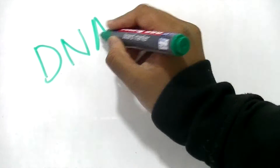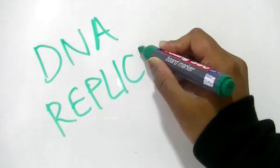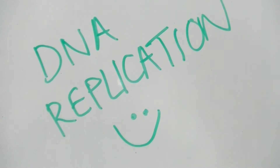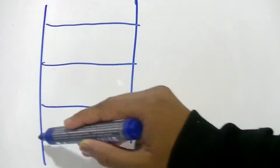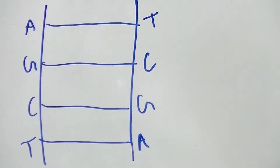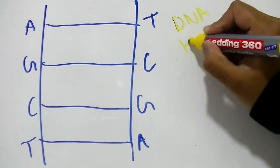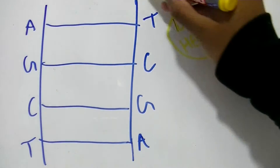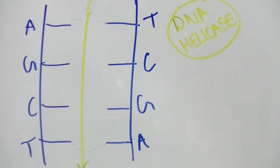Today we'll be looking at DNA replication. First of all, DNA helicase, an enzyme, breaks the weak hydrogen bonds between the strands. Both strands therefore unwind and open, and then both strands act as a template for DNA replication.